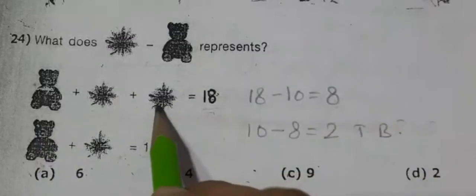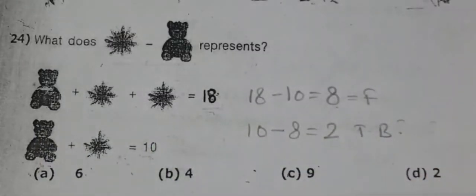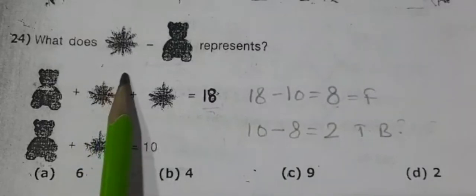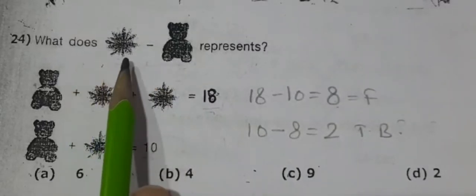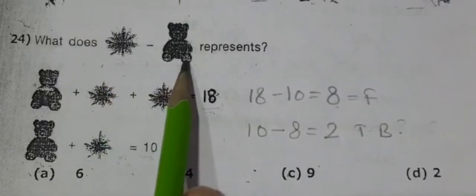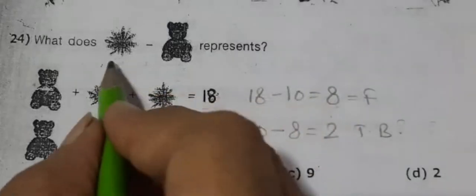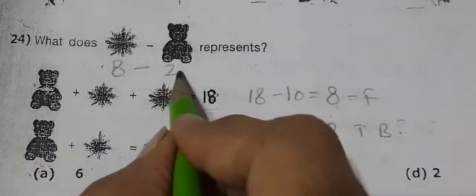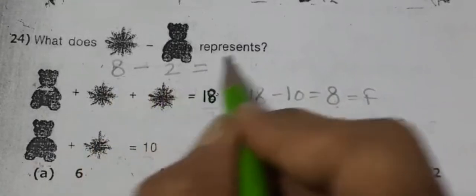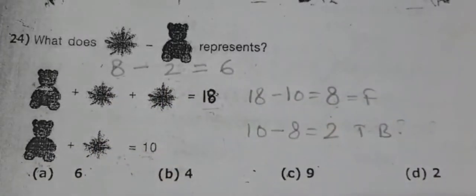Now we find the teddy bear's value. One flower plus one teddy bear equals 10, so 10 minus 8 equals 2. The value of one teddy bear is 2. Coming back to the question: flower minus teddy bear equals 8 minus 2, which is 6. Option A is correct.